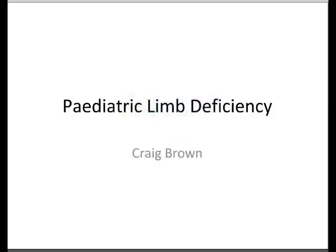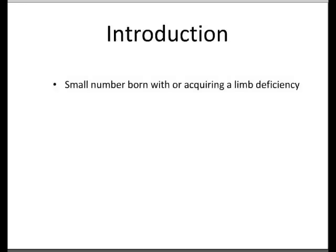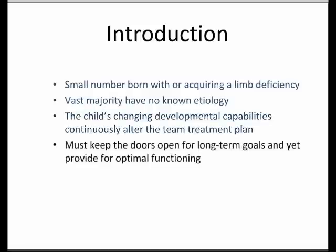The important thing to remember is there's a small number of children born with, or who actually acquired during life, a limb deficiency. The vast majority don't have any cause. If you remember back to your detailed embryology, it's still fairly poorly understood. The child will continually change developmentally and that will have to alter what you do and alter what you plan for them.